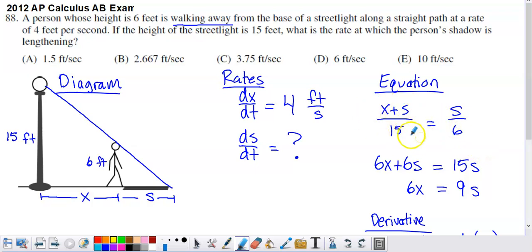What I need to do with this is I need to take the derivative of both sides of this equation with respect to T, because after I've done that, I'm going to have generated a dX/dt that I can put 4 in place of, and a dS/dt that I can solve for.